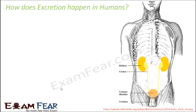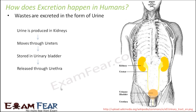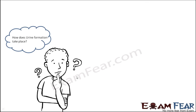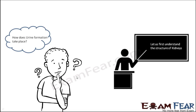How does excretion happen in human beings? Wastes are excreted in the form of urine, which is produced in the kidneys. Urine moves through the ureters, is stored in the urinary bladder, and is then released through the urethra — those are the four simple steps of excretion. Now, how does urine formation take place? Before understanding that, it is very important to be aware of the detailed structure of the kidneys. Once we understand kidney structure, we will discuss the process of urine formation.